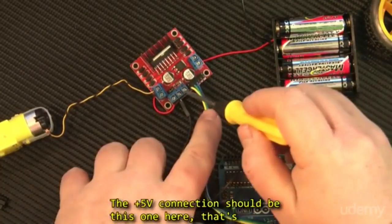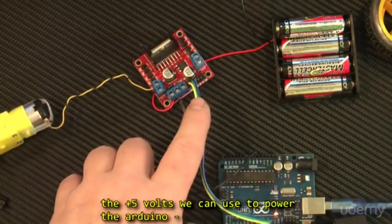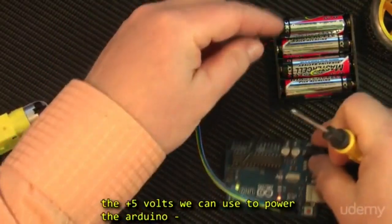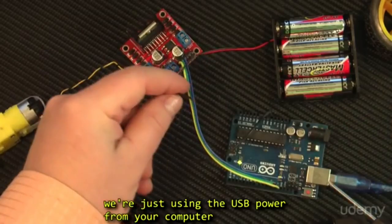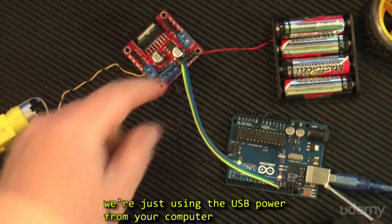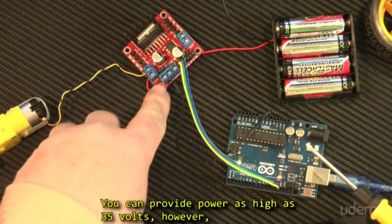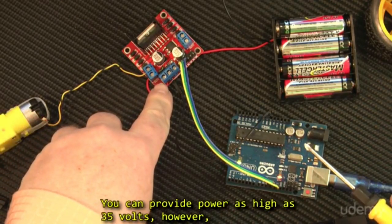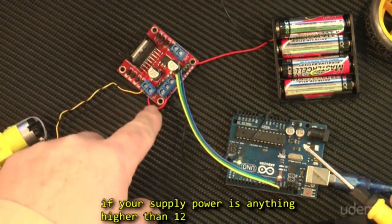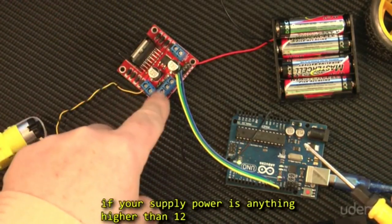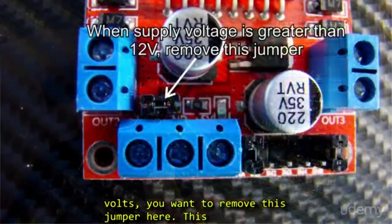The plus 5 volt connection should be this one here, that's the plus 5 volts that we can use to power the Arduino. We're not going to bother with that yet, because we're just using the USB power from your computer to power the Arduino anyway. You can provide power as high as 35 volts. However, if your supply power is anything higher than 12 volts, you want to remove this jumper right here.